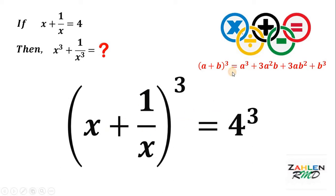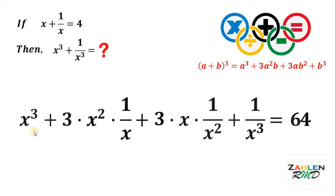Applying this identity, we have x cubed plus 3 times x squared times 1 over x plus 3 times x times 1 over x squared plus 1 over x cubed. We just apply this identity on the top. And it is equal to 64 which is equal to 4 cubed.